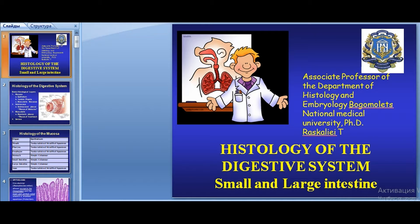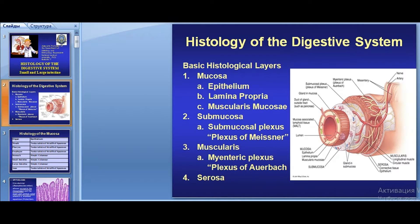Histology of the digestive system: small and large intestine. The general plan of structure of all digestive tubes is a tubular organ, which has an inside space, tubular shape, and three layers of the wall: mucosa together with submucosa, muscularis, and serosa.